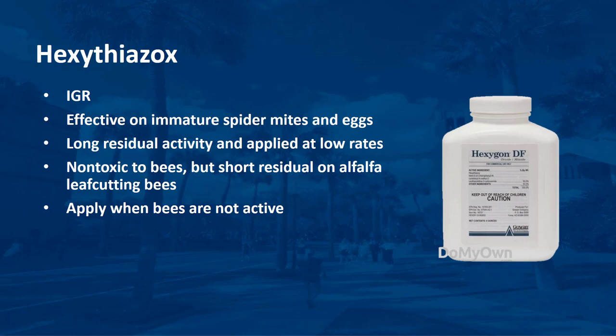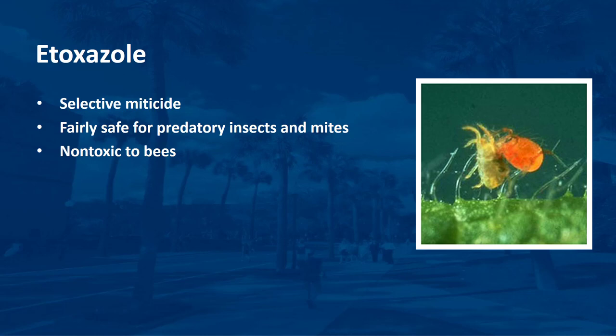Hexythiazox is a mite growth regulator that disrupts mites' normal development. It is effective against immature spider mites and eggs, has long residual activity, and is applied at low rates. Hexythiazox is selective for spider mites. There is no bee precautionary statement on the Hexygon label and it is generally considered non-toxic to bees, although there may be a short residual effect on alfalfa leafcutting bees. As a caution, apply hexythiazox in the evening, night, or early morning when bees are not visiting blooming plants. Since hexythiazox is selective for mites, other pollinators and natural enemies should not be affected. Etoxazole is a selective miticide effective against most plant-feeding mites but fairly safe for most predatory insects and mites. Etoxazole is practically non-toxic to adult honey bees.